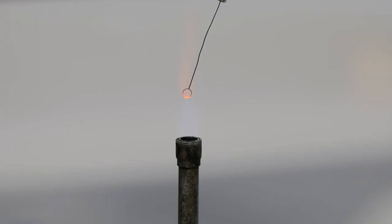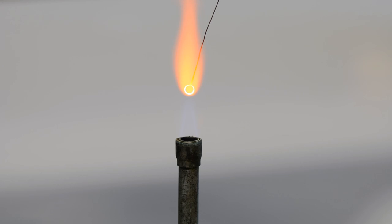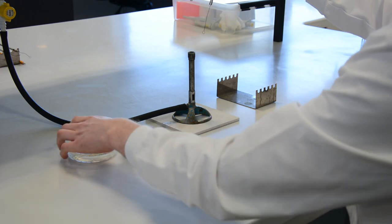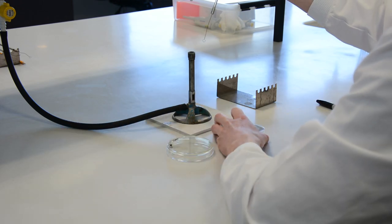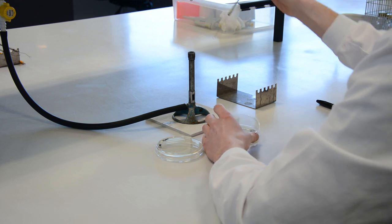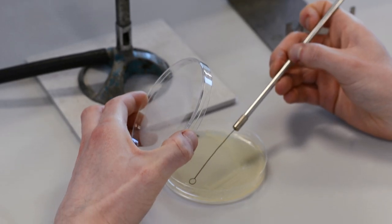To streak plate, we use a wire loop. We sterilize it before use by holding it in the hottest part of the Bunsen burner flame, reasonably vertically, so as much of the loop and wire as possible can be heated. It is now allowed to cool as a hot loop will kill the very microbe that you are intending to culture.